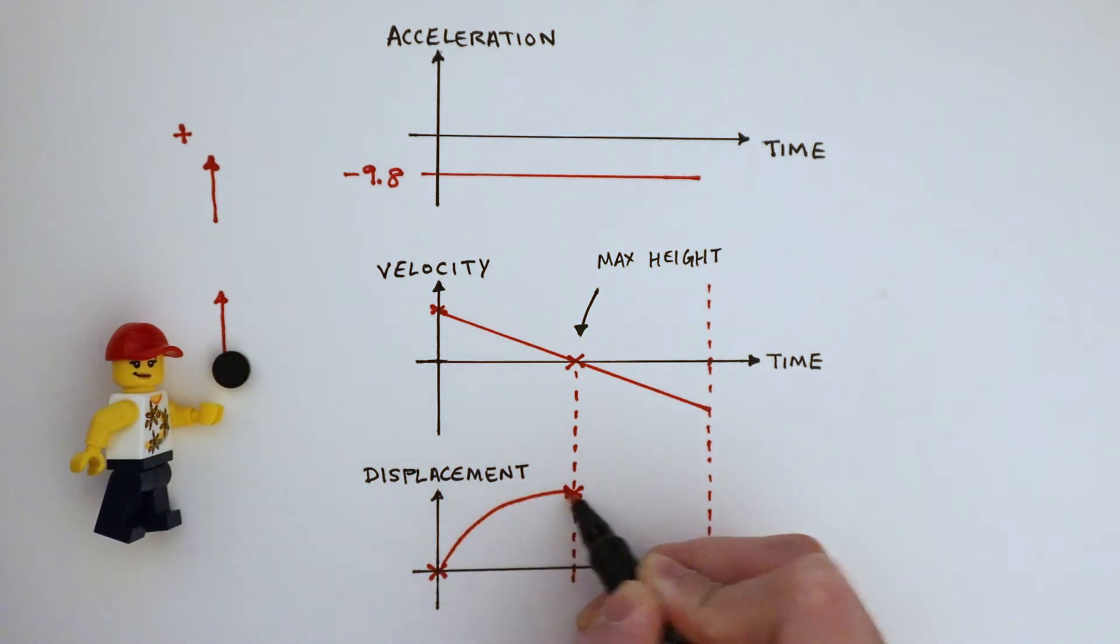I'm going to join these three points with a smooth curve, and then I'll explain why this makes sense.